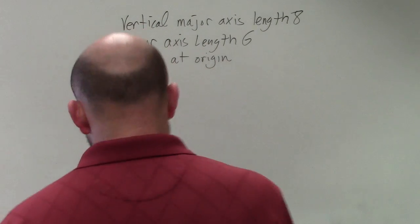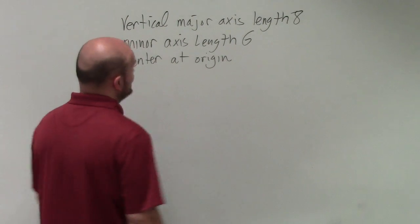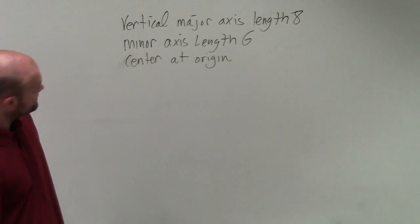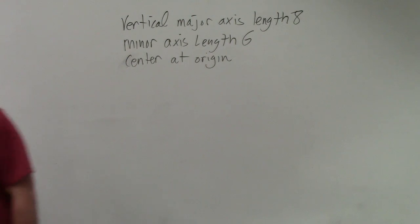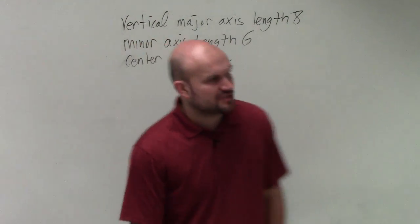I can do a problem for you, because you still have some other ones to do. So this one has the vertical major axis length of 8, minor axis length of 6, and the center at the origin. If you guys go back to my notes, the first thing I do is I tell you to plot the information.